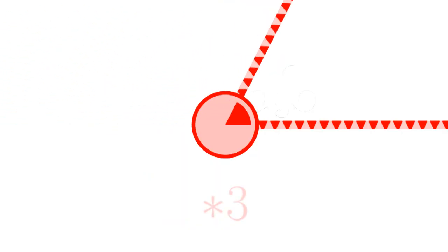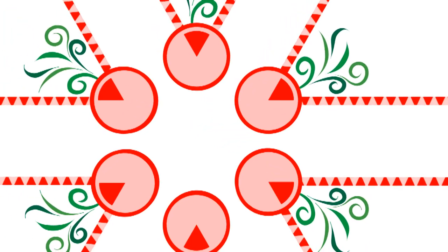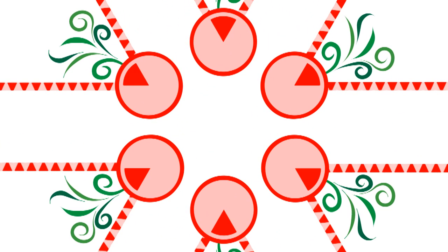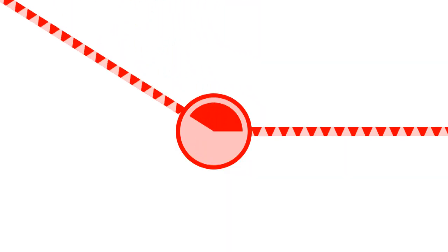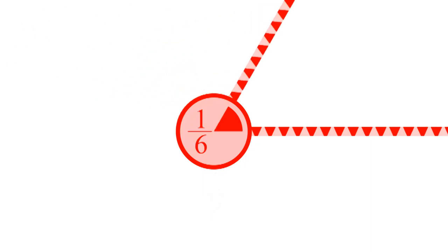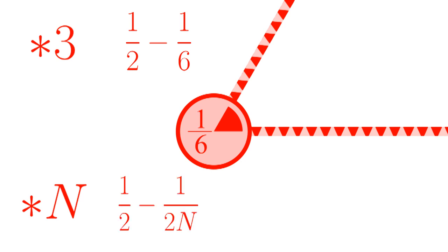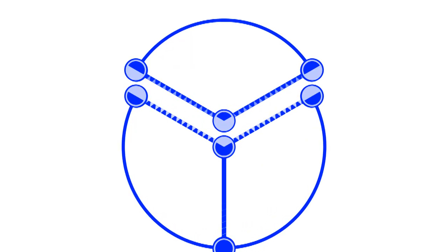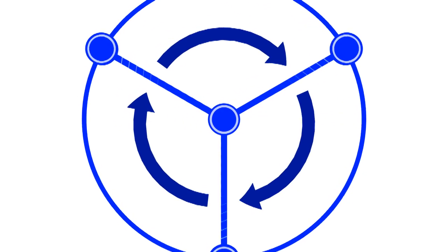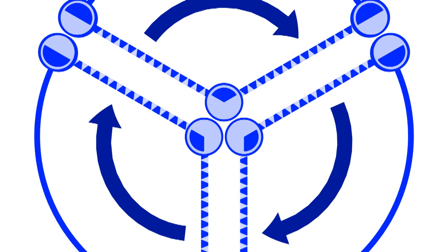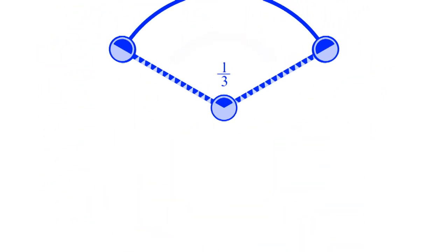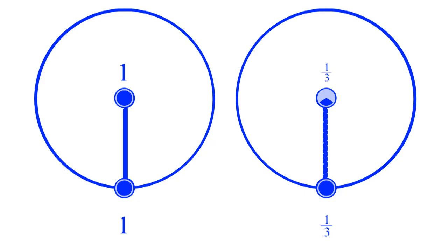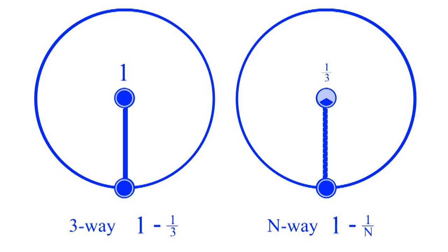What happens when we add a three-way reflection point? When we do the reflections, we copy the orbifold six times at this vertex, so each orbifold contains one-sixth of the vertex. By adding a three-way reflection point, we've converted half a vertex into a sixth of a vertex — we've lowered the characteristic by one-half minus one-sixth. In general, an n-way reflection point will lower the characteristic by one-half minus one over two-n. What happens when we add a three-way rotation? We take the orbifold and cut it like a slice of pizza. When we apply the rotation, we copy the orbifold three times. This vertex came from three orbifolds, with each contributing one-third. By adding a three-way rotation, we replace one vertex with a third of a vertex, lowering the characteristic by one minus one-third. In general, an n-way rotation lowers the characteristic by one minus one over n.